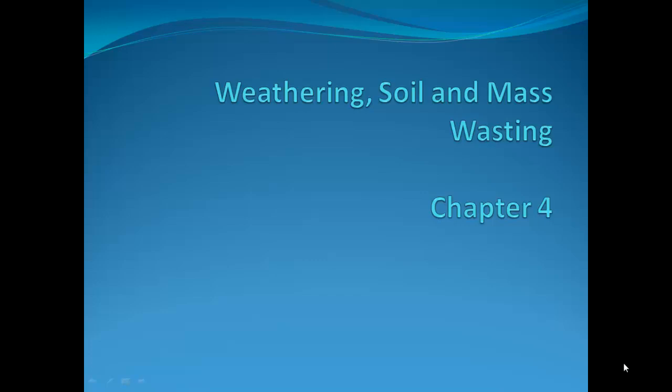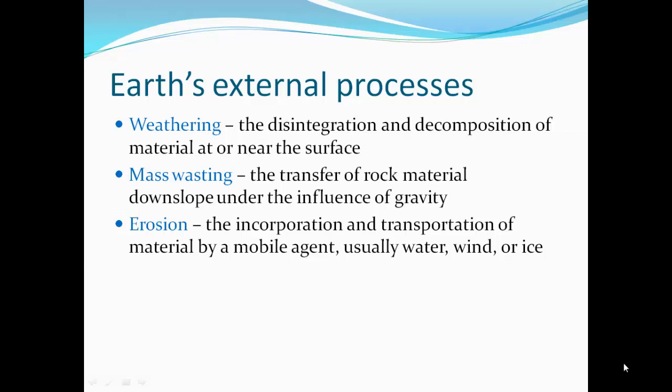Weathering, Soils, and Mass Wasting, Chapter 4 - Earth's External Processes. That's what happens on the surface of the Earth. There's weathering, which is the disintegration and decomposition of material at or near the surface. Mass wasting, the transfer of rock material downslope under the influence of gravity. And erosion, the incorporation and transportation of material by a mobile agent, usually water, wind, or ice.